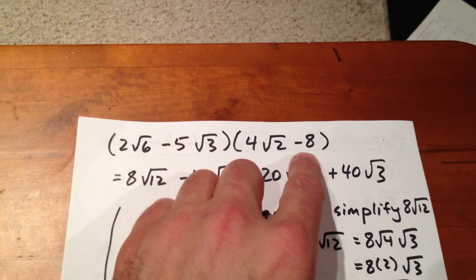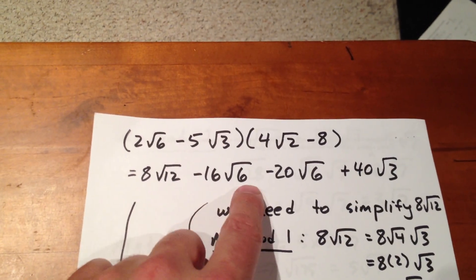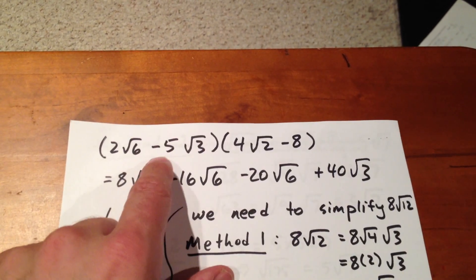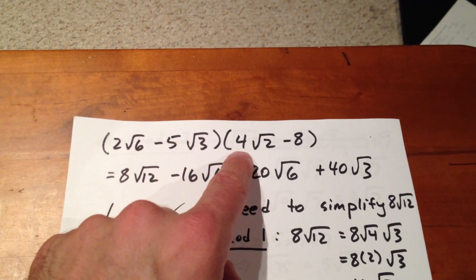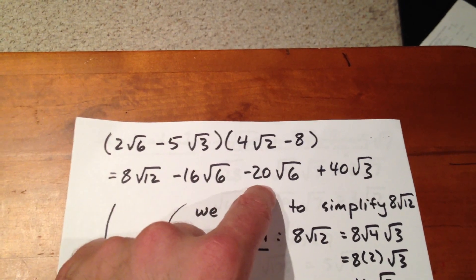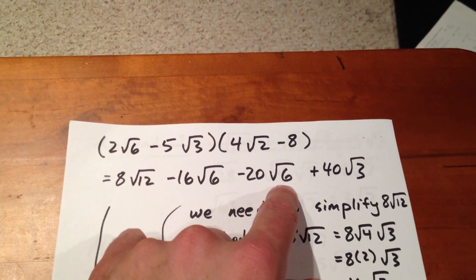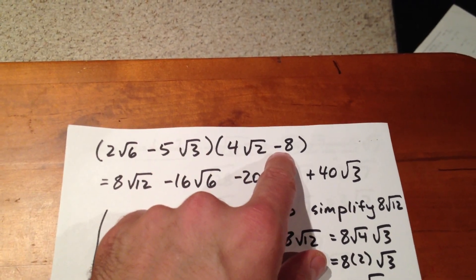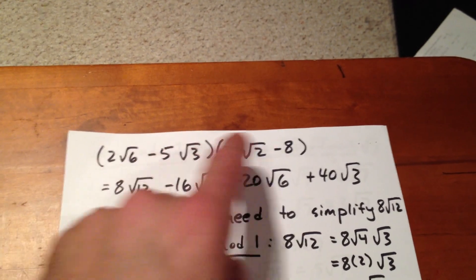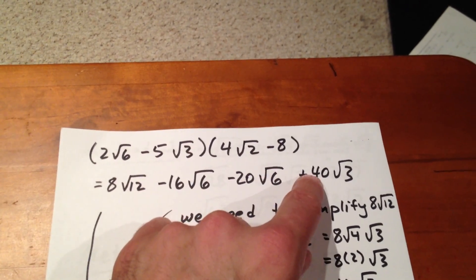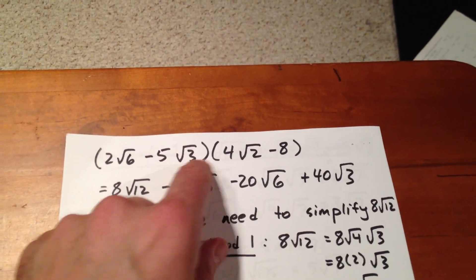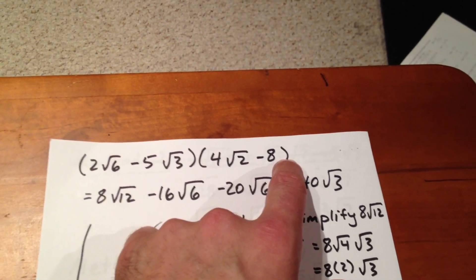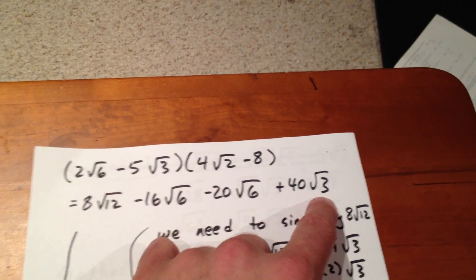2√6 times -8 is -16√6. Next, -5√3 times 4√2: multiply -5 and 4 to get -20, and √3 times √2 becomes √6, giving -20√6. Finally, -5√3 times -8: -5 times -8 is 40, and the √3 has no counterpart in terms of an irrational factor in this term, so it remains √3, giving 40√3.